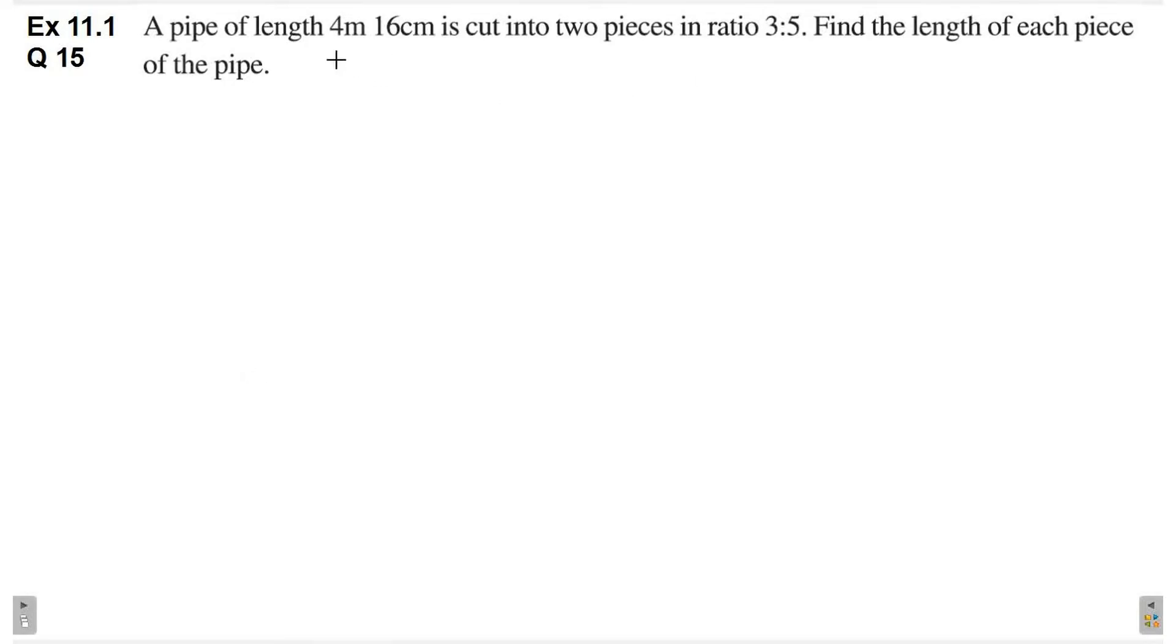So, pipe ki total length given hai. Pipe ko 2 pieces mein cut kiya gya hai. And, dono pieces ki length ki ratio kya hai, 3 is to 5. To, hum ek variable assume kar lenge, us variable ko hum ratio ki each term ke saath multiply karke, pipe ke dono pieces ki value find out karenge.